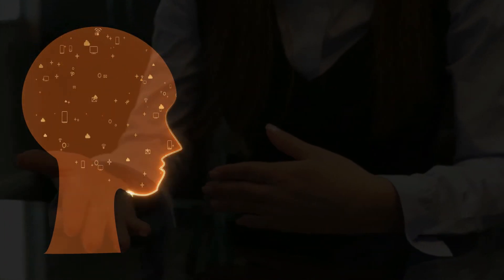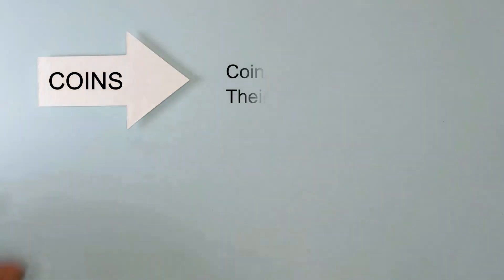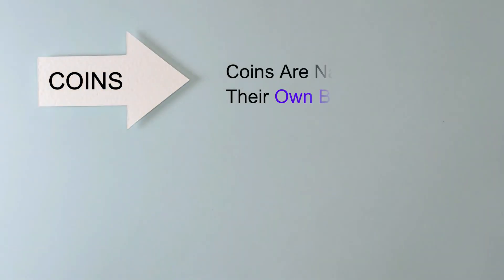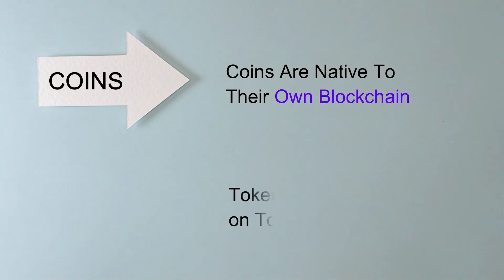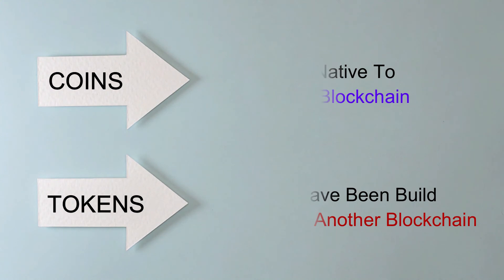Let's conclude. You should now understand what is meant when someone says digital coin and digital token. You should now know the simple definition of both a coin and a token. Coins are native to their own blockchain, whilst tokens have been built on top of another blockchain, like Ethereum, NEO, or Waves.